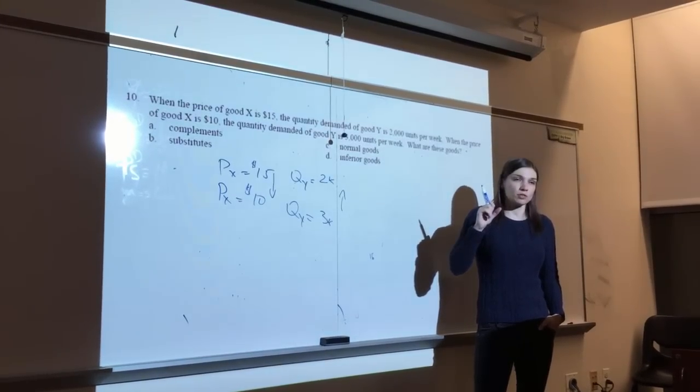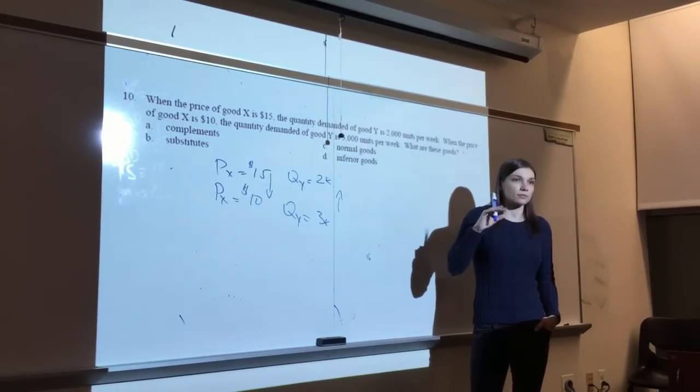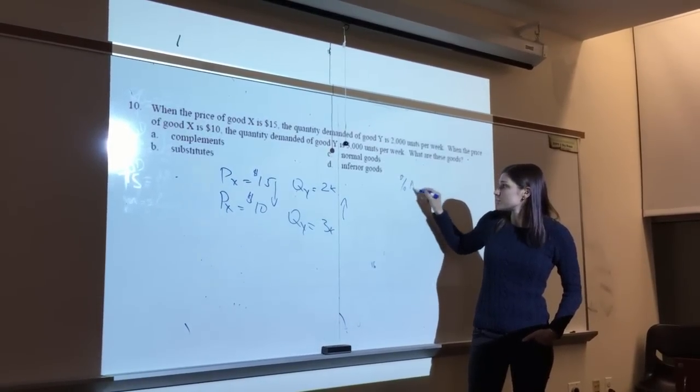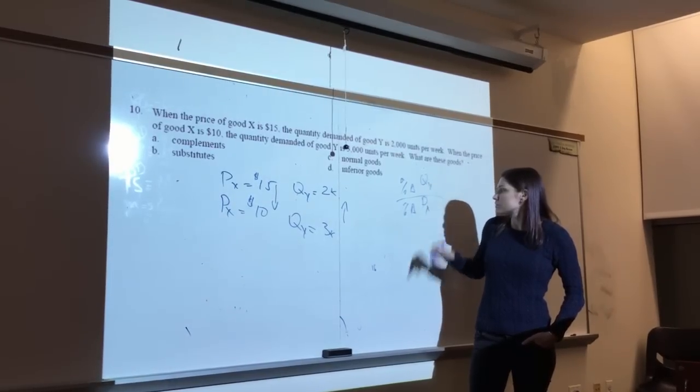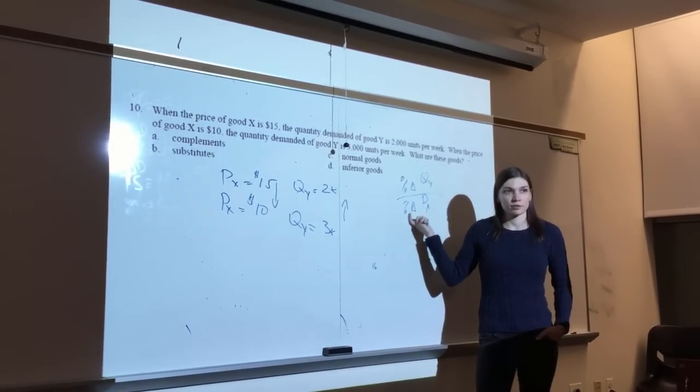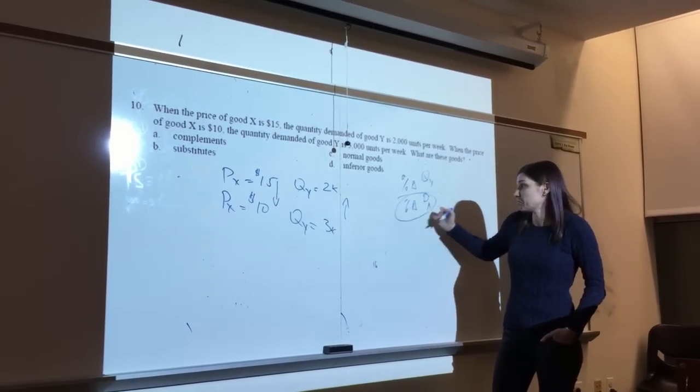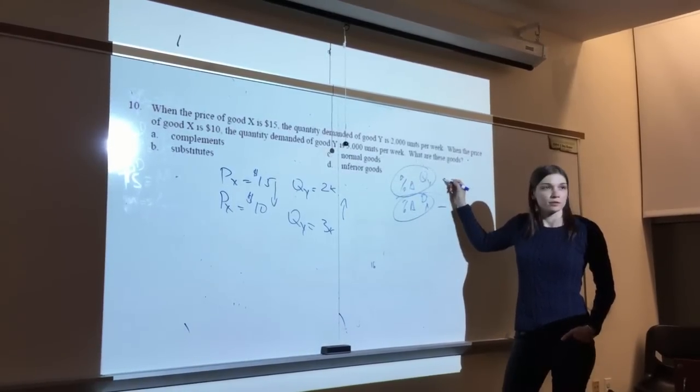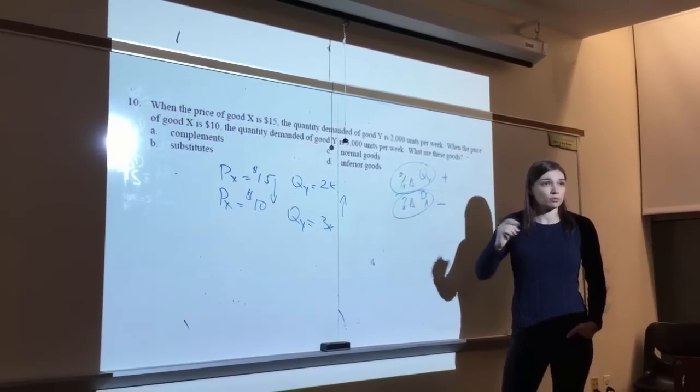No, that's not true. What is the formula for cross-price elasticity? The percentage change in quantity Y versus the percentage change in price of X. So the price of X is changing in which way? Is it going up or down? So this quantity, whatever it is, is negative. And this thing is what sign? Positive. Positive. So the cross-price elasticity is negative, which implies that the goods are?